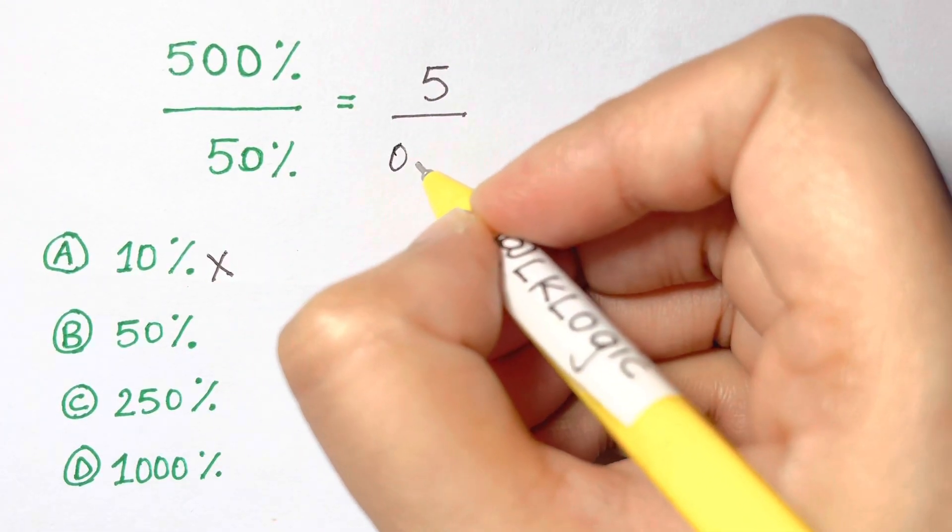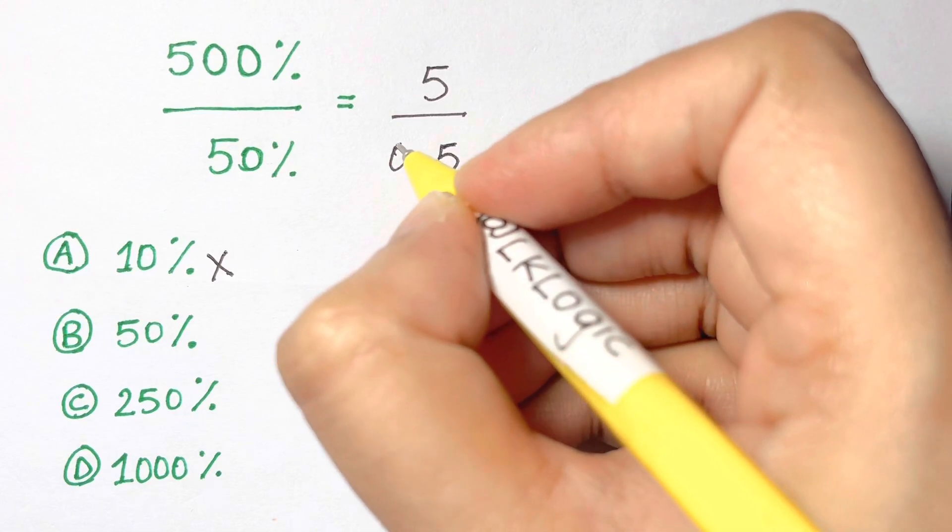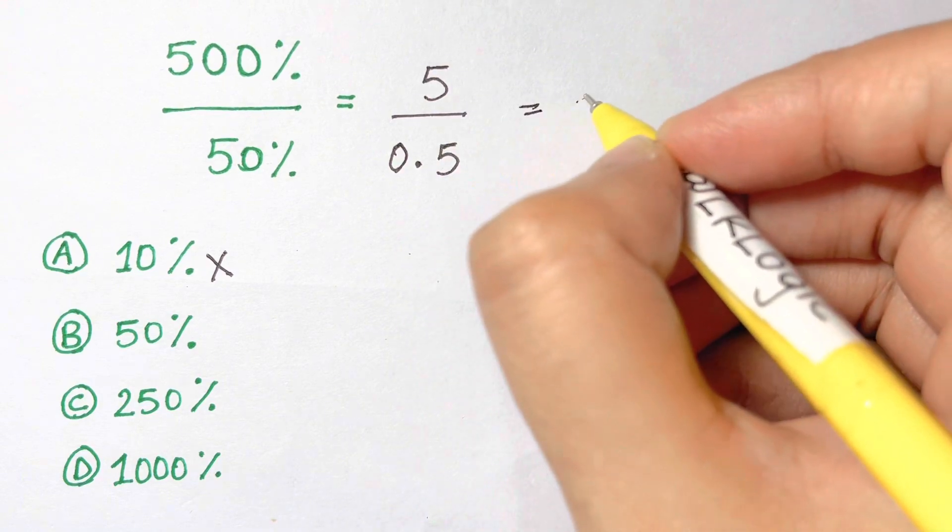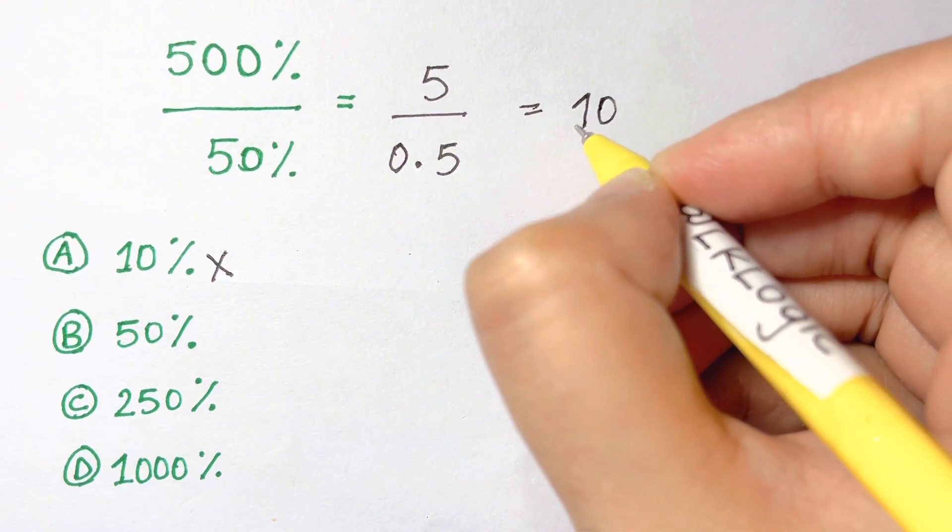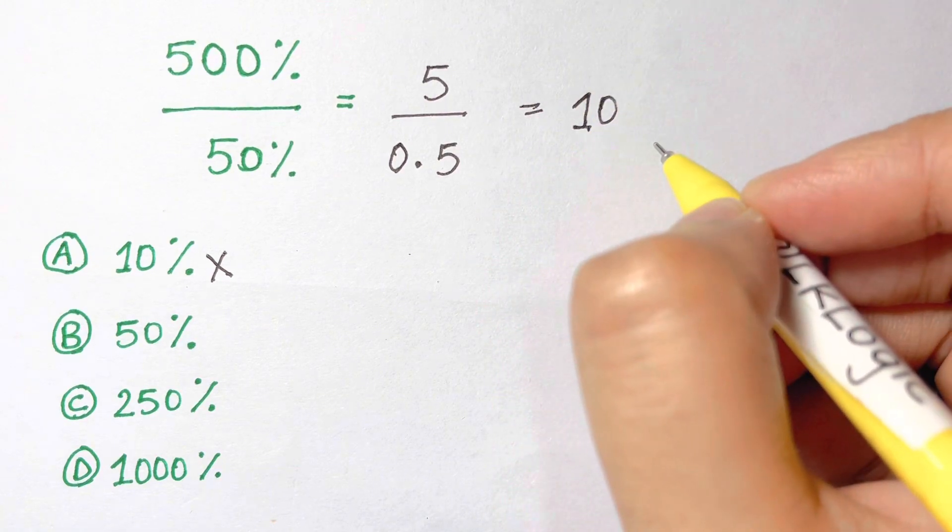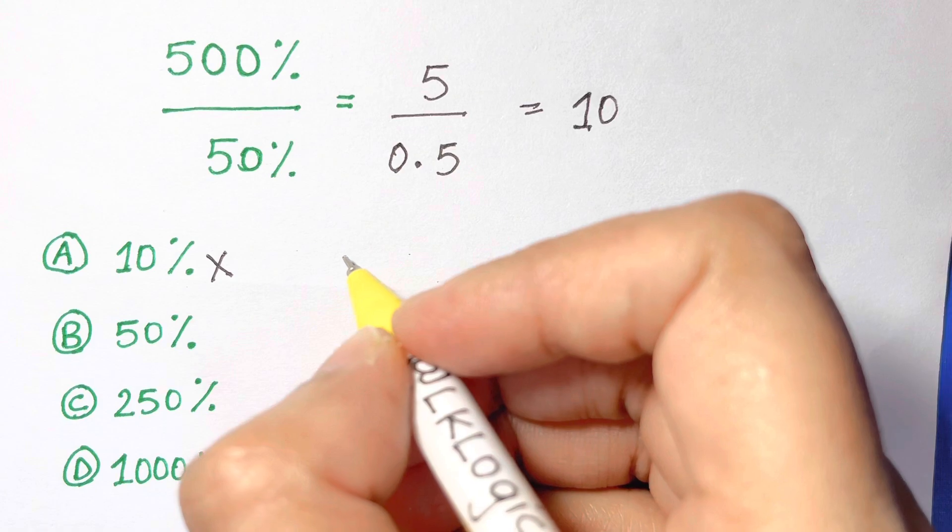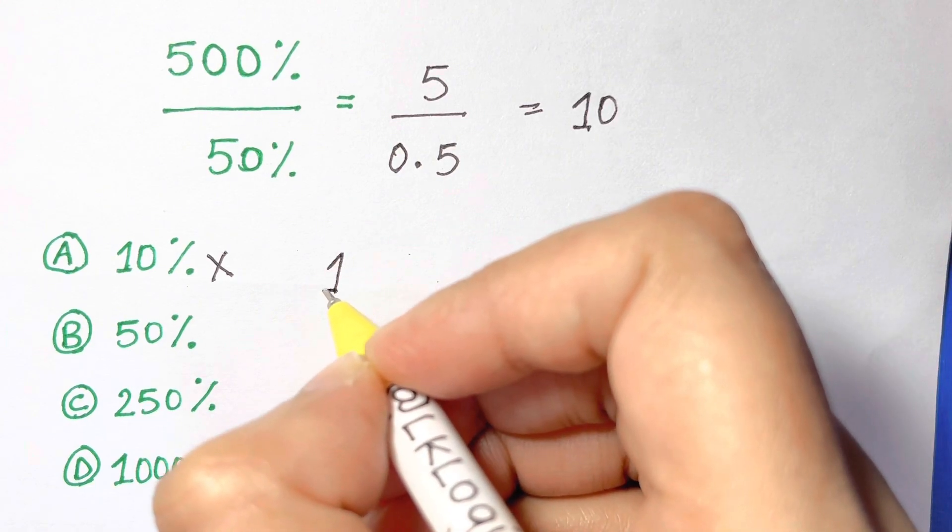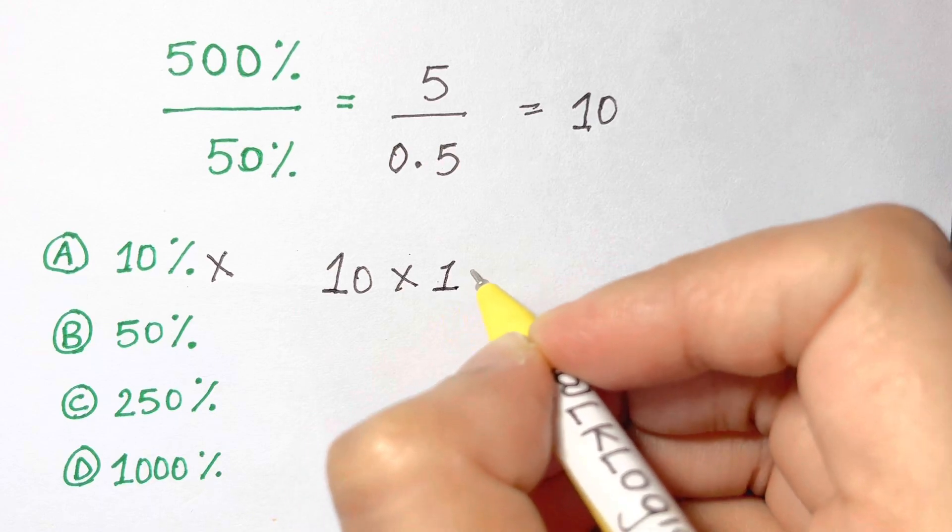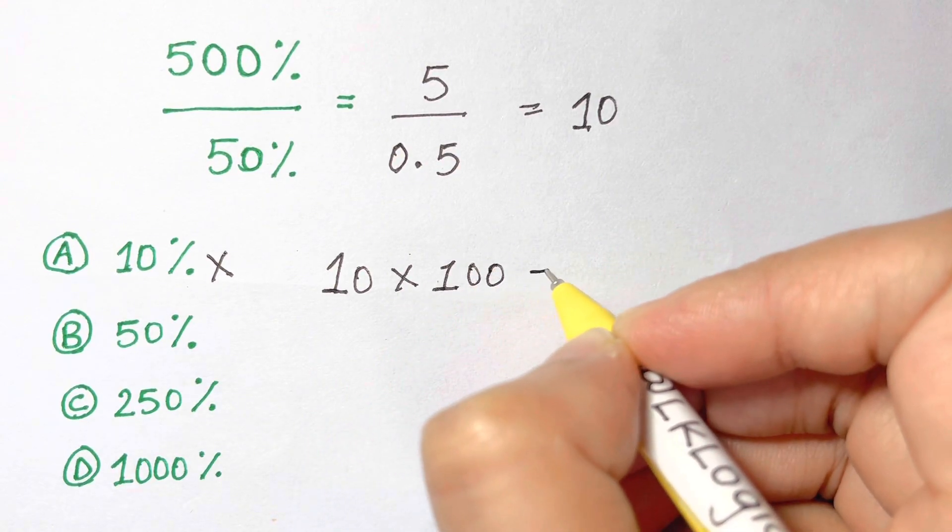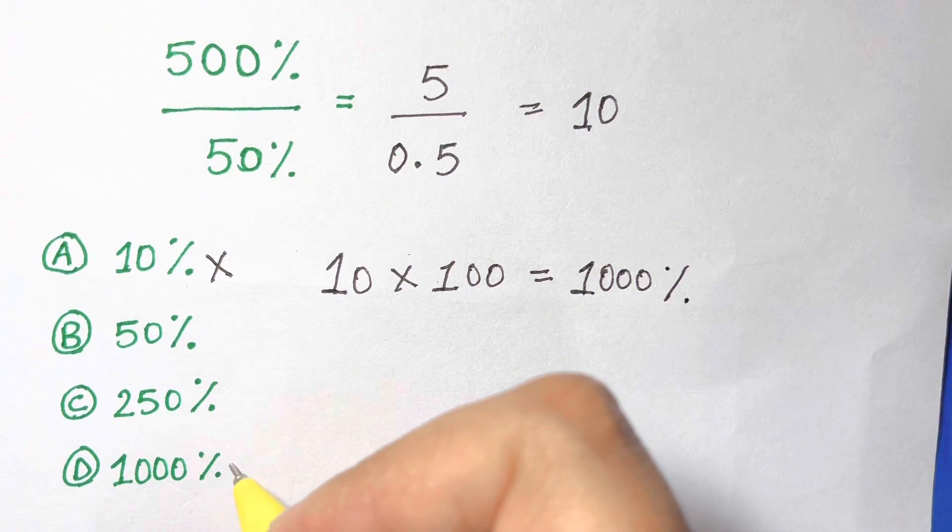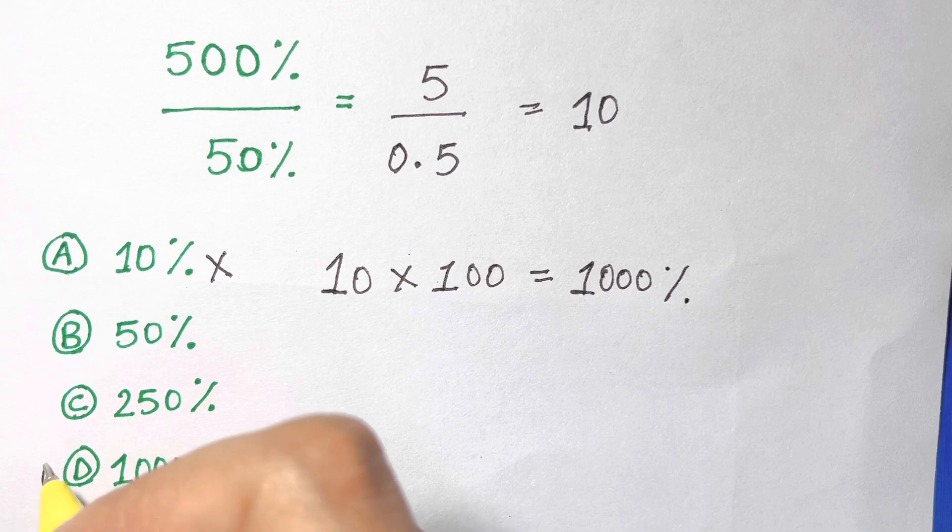And now 5 over 0.5 is 10. Of course, so you've got the value of 10, but this is not in percentage. You have to convert it back to percent. So when you're converting back to percent, you just multiply 10 times 100, and that's equal to 1000 percent. So that's your answer: 1000 percent.